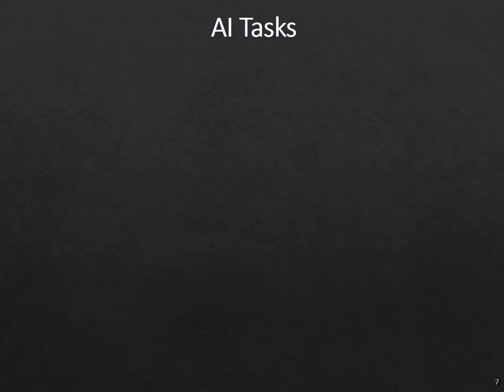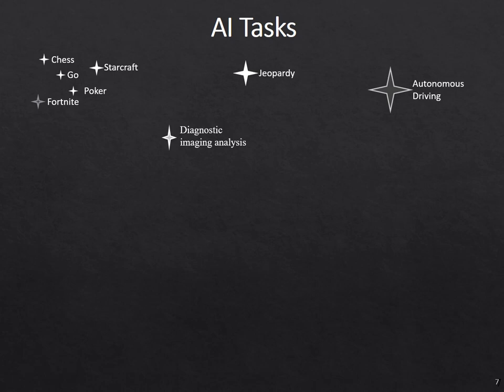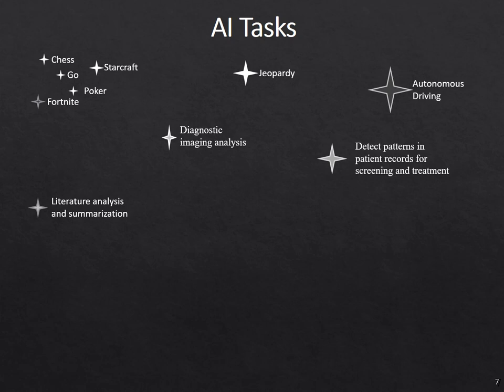If we think of AI tasks, we can think of them as mostly being individual with individual architectures. We might have game-playing tasks such as StarCraft and poker. We also have completely different tasks like Jeopardy, diagnosing imaging analysis, autonomous driving, detecting patterns in patient records, or AI systems that do literature analysis and summarization. Each of these is an extremely impressive system on its own, but it is a system on its own — not a system that can do many different tasks.